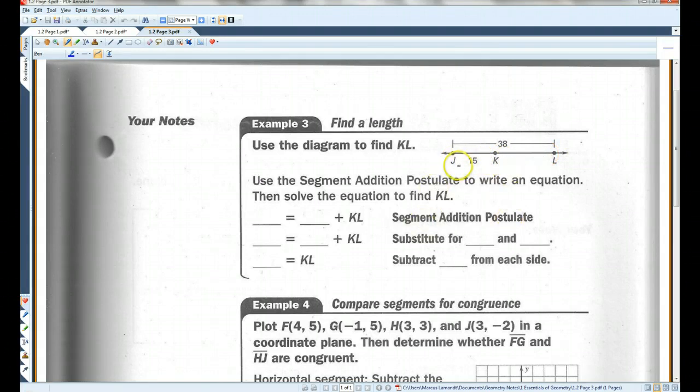Now the Segment Addition Postulate says JL is equal to JK plus KL. That's the Segment Addition Postulate. We know according to the diagram that JL is 38, and JK is 15. So I'm going to substitute those two numbers for JL and JK.